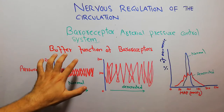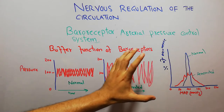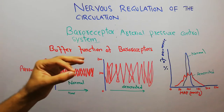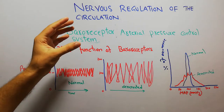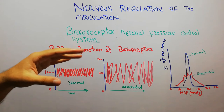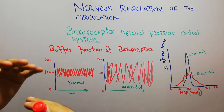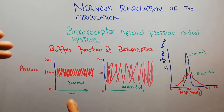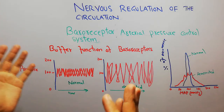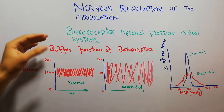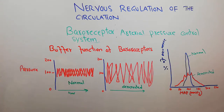Today in this lecture we are going to discuss the buffer function of baroreceptors. Because the baroreceptors oppose change in the arterial pressure — they increase the pressure when it is decreasing and decrease the pressure when it is increasing. That's why it is known as a pressure buffer system, and the nerves involved in the baroreceptor buffer system are known as the buffer nerves.